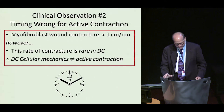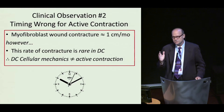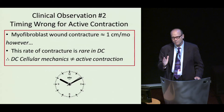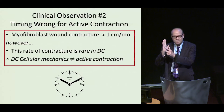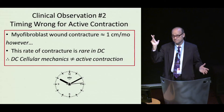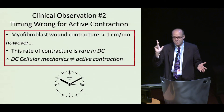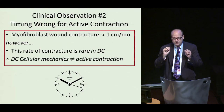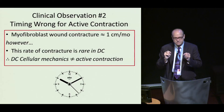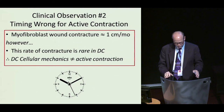Second clinical observation is that the timing is wrong. Myofibroblast wound contracture runs at about a centimeter a month. At that rate, you should go from a nodule to a finger contracture in the palm in less than a year. But that is very rare, meaning the cellular mechanics of Dupuytren contracture must have some fundamental difference from run-of-the-mill active wound contracture.